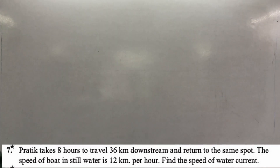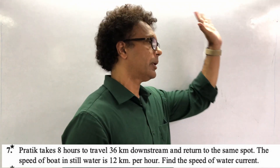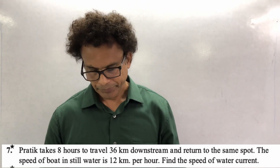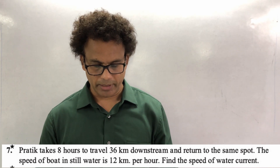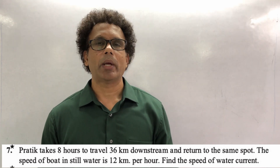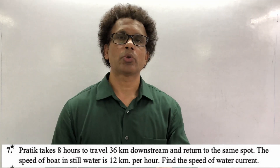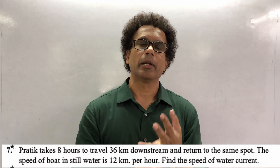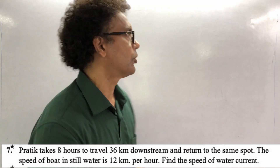Check the question: Pratik takes 8 hours to travel 36 km downstream and 36 km upstream. The total time taken is 8 hours. The speed of the boat in still water is 12 km per hour. You have to find the speed of the river current. When we go to linear equations, the speed of the river current is what we need to find here.